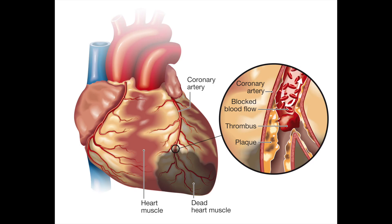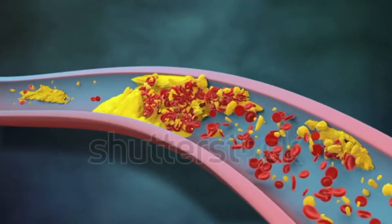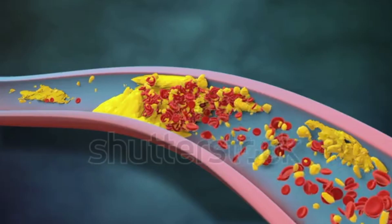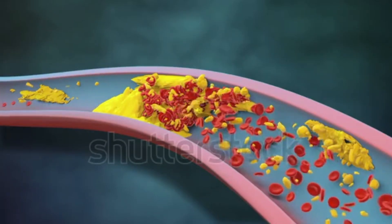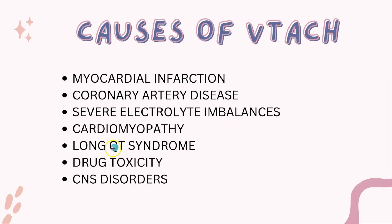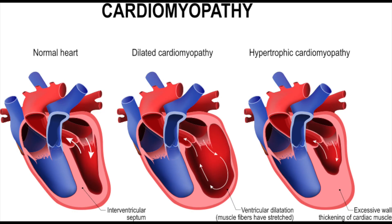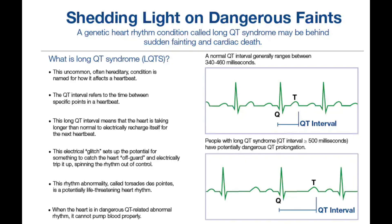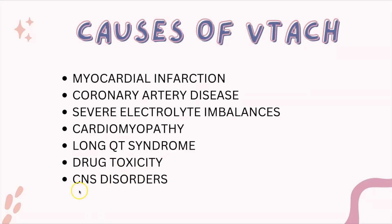Causes of ventricular tachycardia include myocardial infarction, coronary artery disease, severe electrolyte imbalances, cardiomyopathy, long QT syndrome — which is genetic — and medications that prolong the QT interval, such as geodon (ziprasidone). Additional causes include drug toxicity and central nervous system disorders.